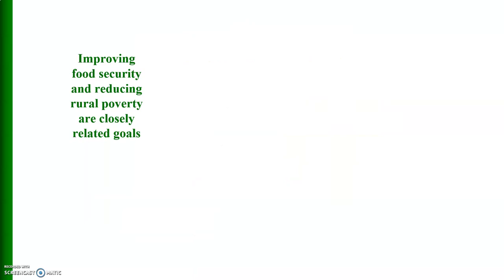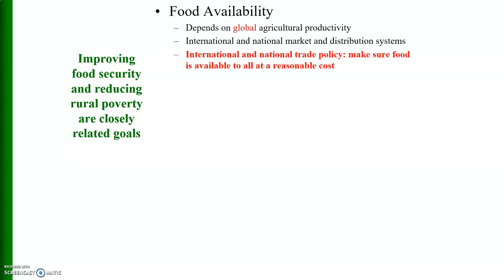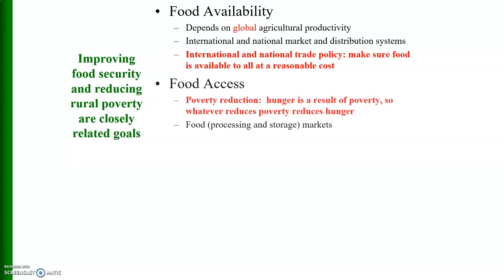Improving food security and reducing rural poverty are closely related goals. So how can we do that? Food availability depends upon global agricultural productivity — if global agricultural productivity increases, more food will be available. International and national market and distribution systems should be developed. International and national trade policy should ensure food is available to all at a reasonable cost. Food access reduces poverty, and since hunger is a result of poverty, whatever reduces poverty will reduce hunger.